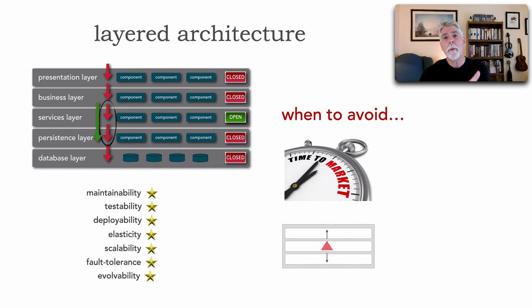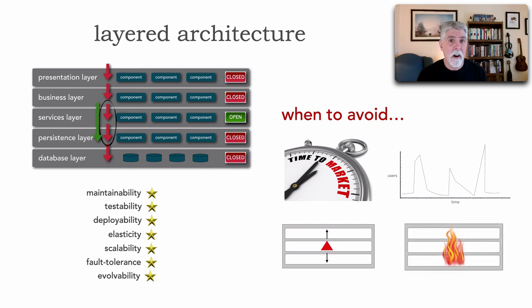Also, if you start to find that most of your changes are domain based, it's not well suited. Here's a good example: let's say we want to add an expiration date to all of our wish list items. To do that, I would have to apply a change across every single one of these layers. It's not well suited if a lot of our changes are domain based as opposed to technical based. And finally, those high levels of scalability, elasticity, or fault tolerance—this is not an architecture style that's well suited for those.